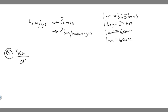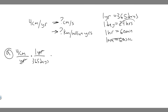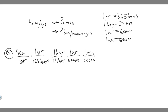We're going to go from years to days, days to hours, hours to minutes, and minutes to seconds. Year is on the bottom, so we write the year on top — one year equals 365 days, which cancels the year. Now we have centimeters per day. One day is 24 hours, one hour is 60 minutes, and one minute is 60 seconds. Each step cancels the previous unit.